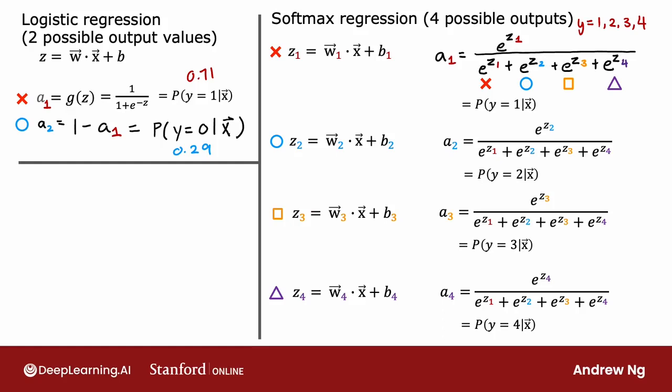The model has parameters w1 through w4 and b1 through b4, and learning appropriate choices for all these parameters gives you a way of predicting the chance of y being 1, 2, 3, or 4 given input features x. Quick quiz: if you run softmax regression and find that a1 is 0.30, a2 is 0.20, and a3 is 0.15, what is a4? Because the probabilities must add up to 1, a4 equals 0.35, which is 1 minus 0.3 minus 0.2 minus 0.15.